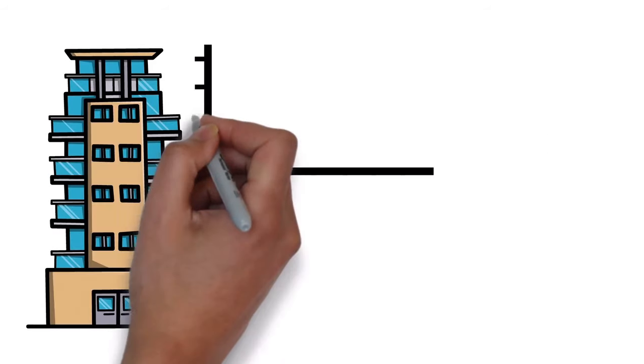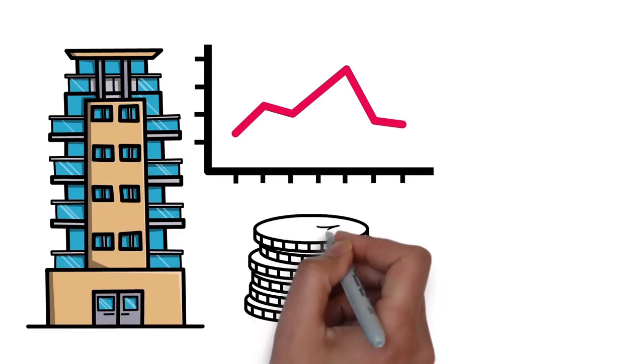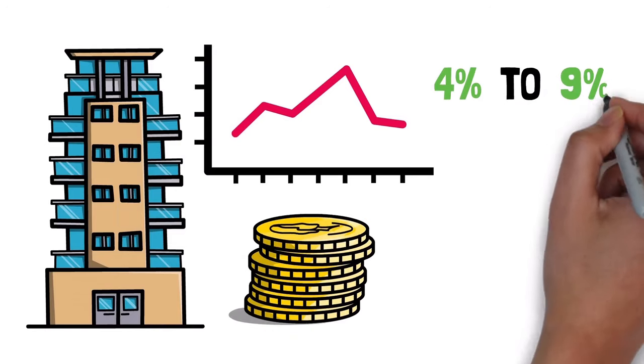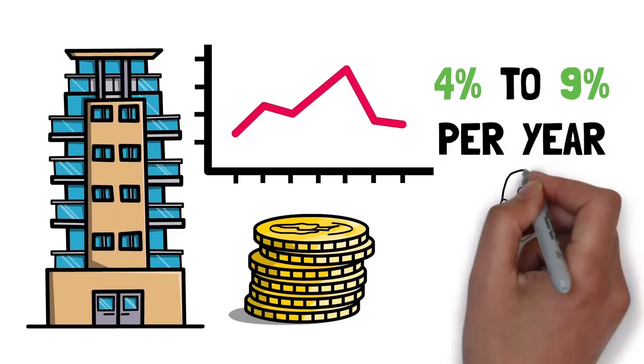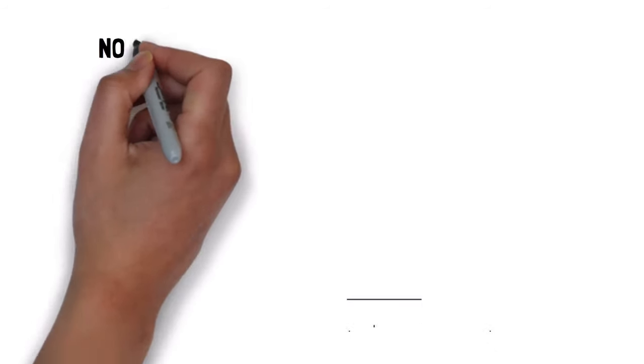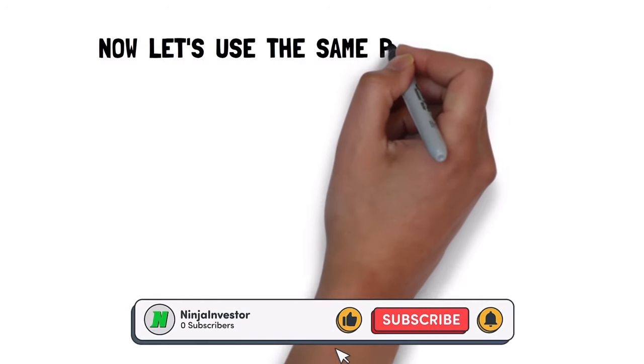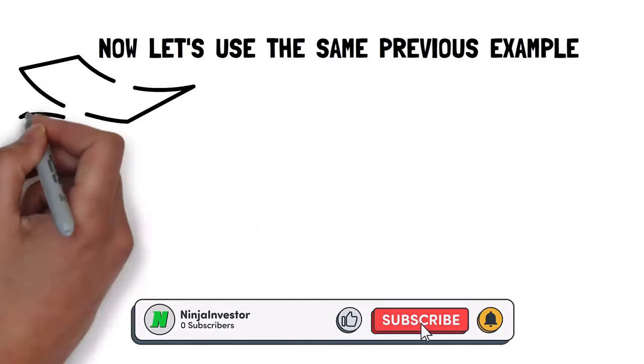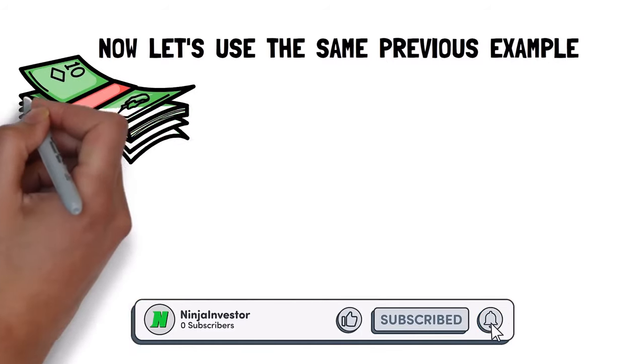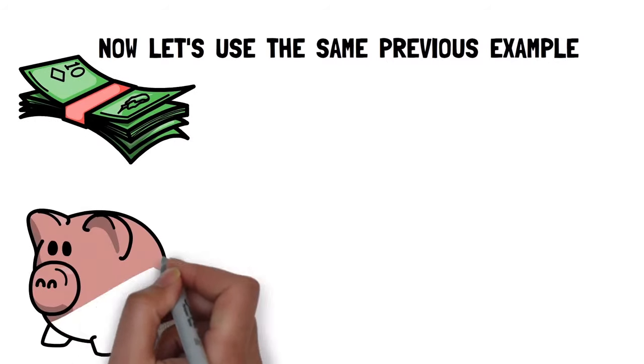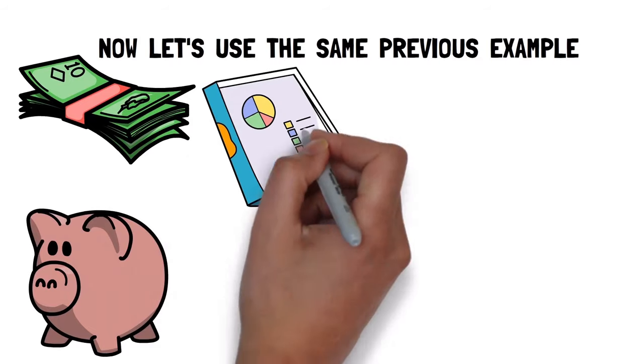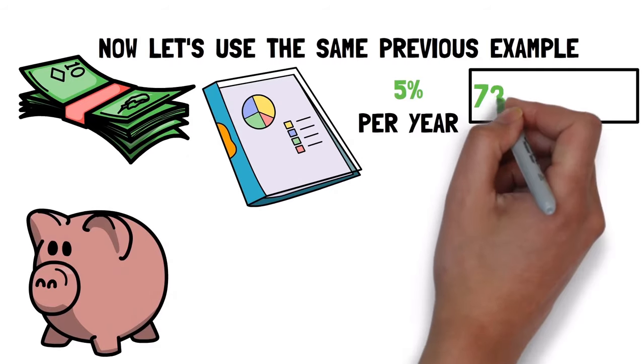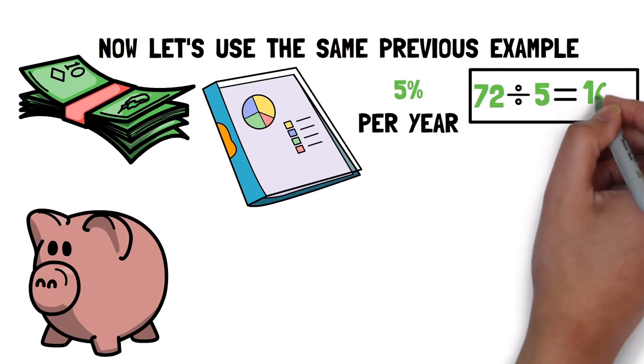There are many investment programs out there that can guarantee a minimum interest rate of at least 4 to 9% per year. You just need to conduct some research. So now let's use the same previous example. You still have the $1,000, but you now put it towards a savings program such as an index fund with an interest rate guarantee of 5% per year. 72 divided by 5 equals 14.5 years.